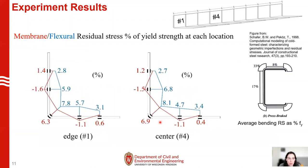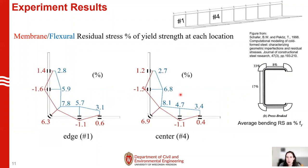This plot shows the flexural and membrane residual stresses as a percent of yield strength. We want to know what they are relative to our yield strength. We can see overall that they are much lower as a percent of yield strength compared to conventional cold-formed steel. Looking at the diagram on the right from a previous study on conventional cold-formed steel — we see 33% in the corner and 17 and 8 on the flats. Here for bending we see about 8% in the corner and perhaps 2 to 4 on the flats. So we do see much lower percent residual stresses relative to yield strength compared to previous studies on conventional steel.